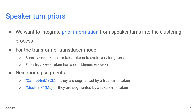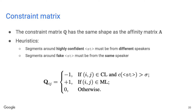Since we have speaker turn detection, we want to use that information during clustering — that's why we introduced speaker turn priors. From the transformer transducer model, we have two types of speaker turn tokens: fake speaker turns inserted to avoid very long turns, and true speaker turns that are real outputs with a confidence score. If two neighboring segments are divided by a real speaker turn, we call it a must-not-link (CL); if divided by a fake turn, it's a must-link (ML). We define a constraint matrix Q with the same shape as the affinity matrix A: if two segments are CL with confidence above threshold sigma, the value in Q is -1; if ML, the value is 0.